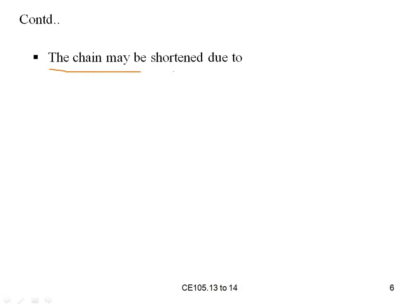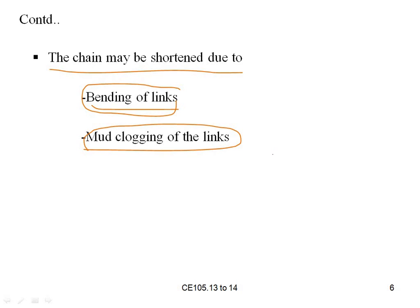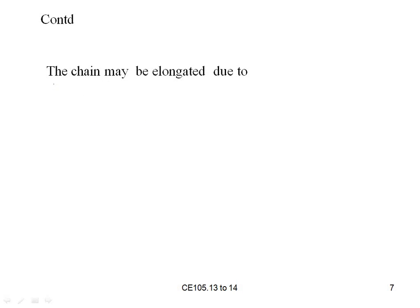The chain may be shorter due to bending of links. If you measure a 30-meter chain with a tape, it may show 29.55 or 29.98 meters — a change of 0.5 to 2 cm can occur because of bending. Another cause is mud clogging of links: since we generally use the chain in muddy areas, mud enters the links and they close up, so the correct distance or length cannot be measured.